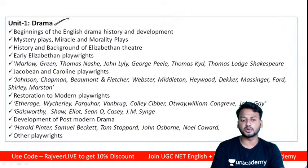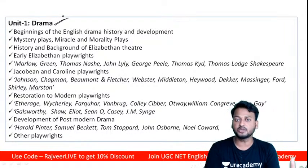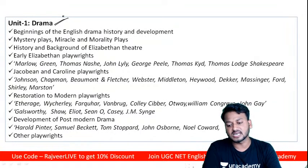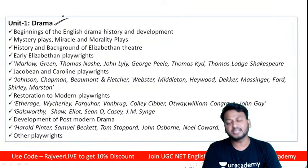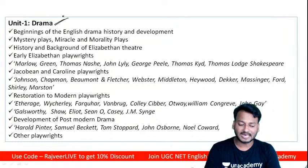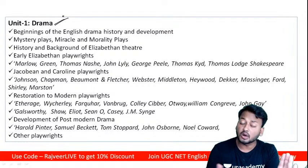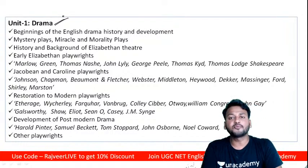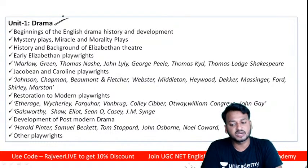If you are going to cover this unit, you must understand the Greco-Roman period. Three major figures from Greek drama are Aeschylus, Sophocles, and Euripides — the original originators of the tragedy form as playwrights.